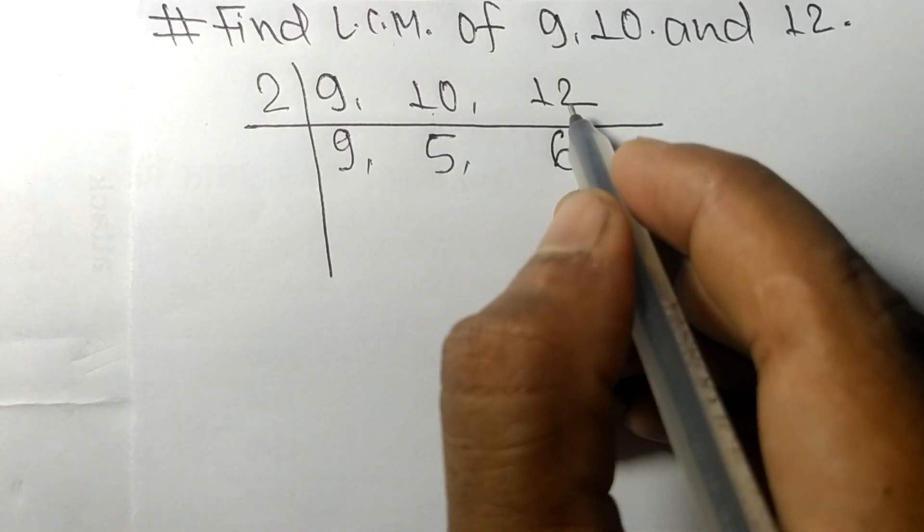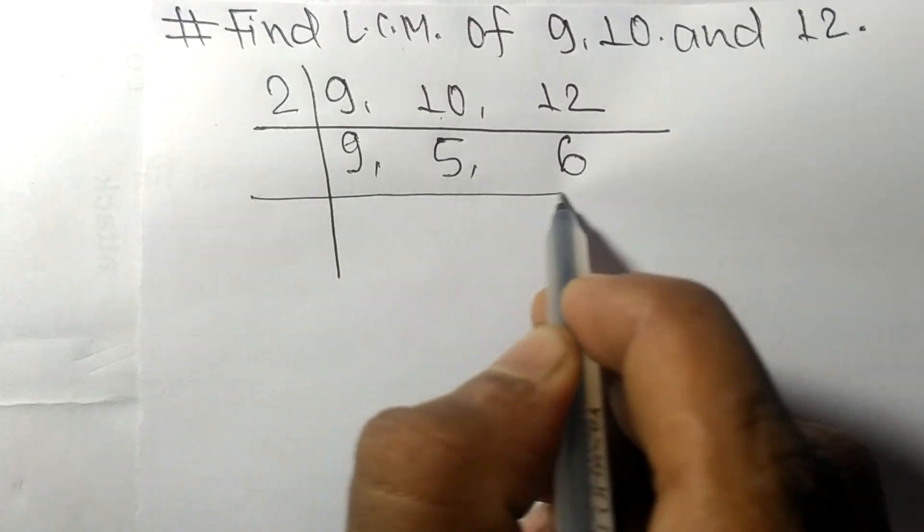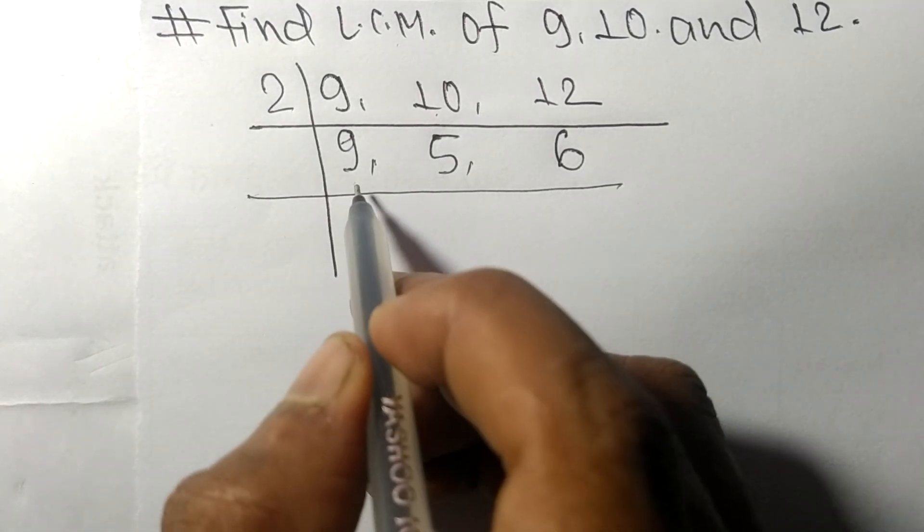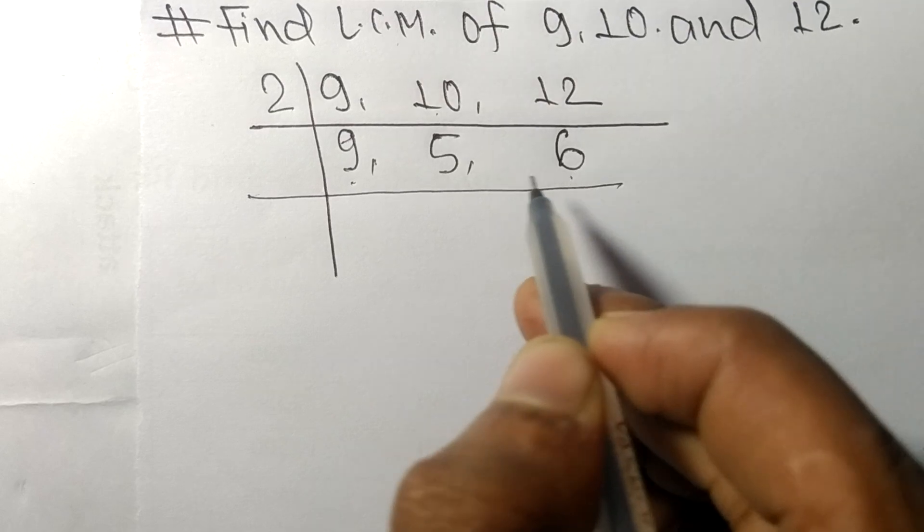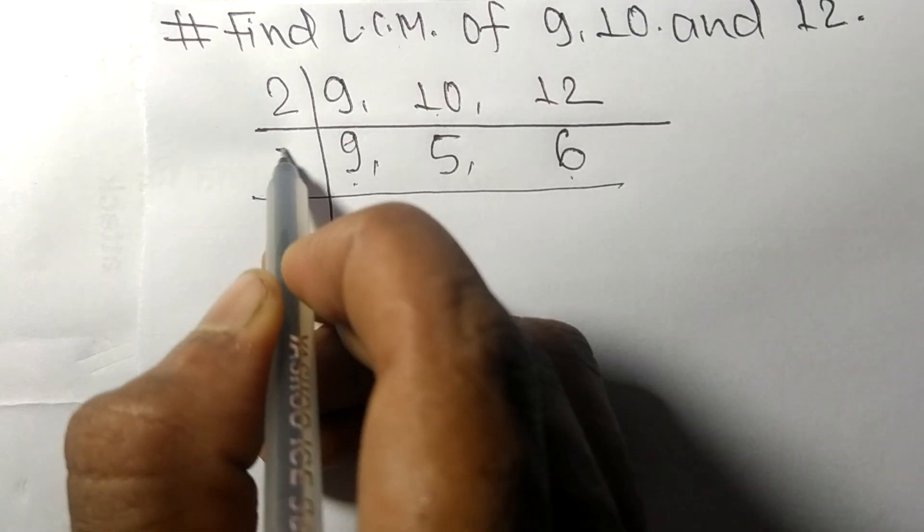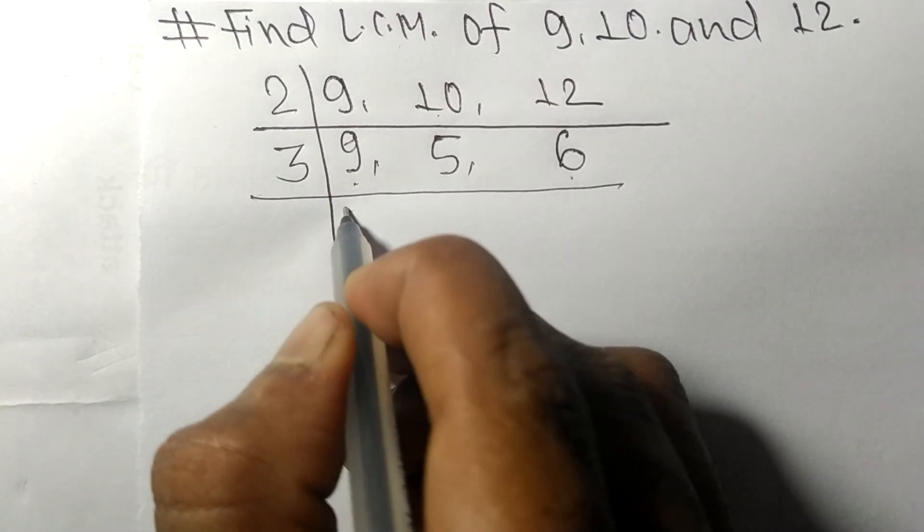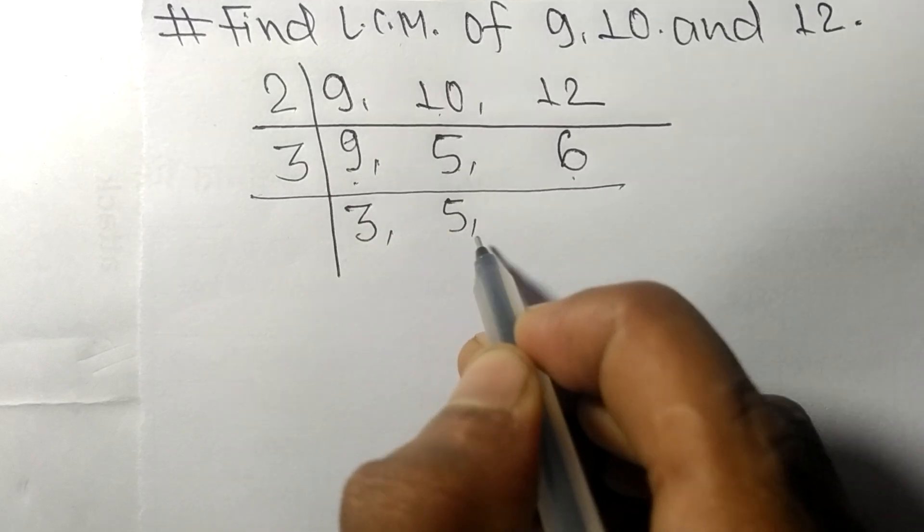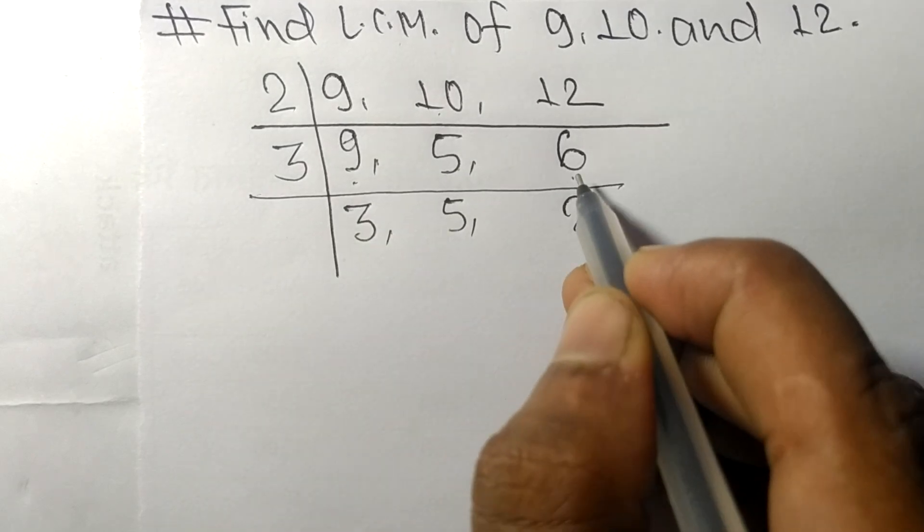Now we got 9, 5, and 6. Among them, 9 and 6 are exactly divisible by 3. 3 times 3 equals 9. 5 is not divisible, so it is same. 3 times 2 equals 6.